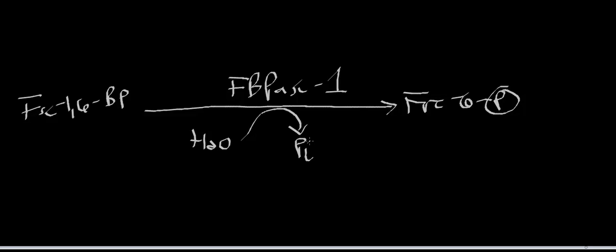It's allosteric just like phosphofructokinase 1. The only difference between PFK1 and this enzyme is that fructose 2,6-bisphosphate has a different effect.